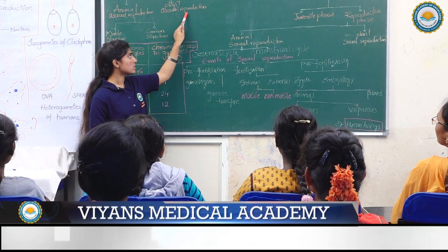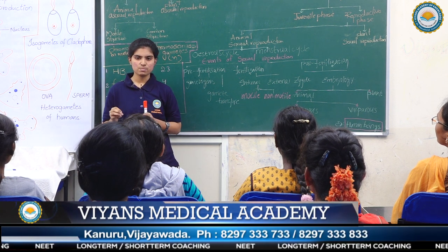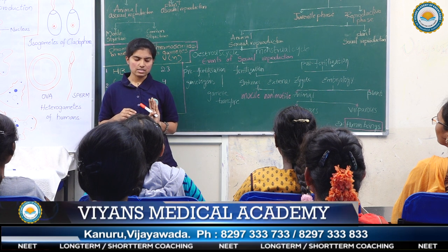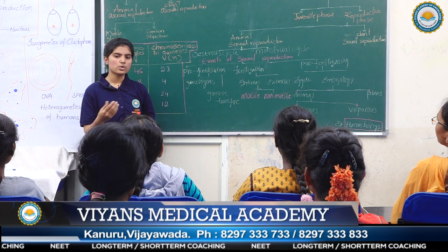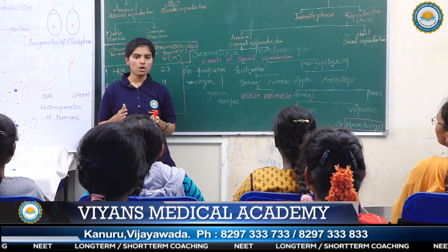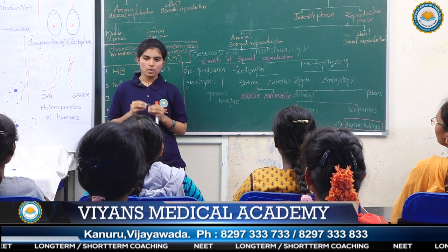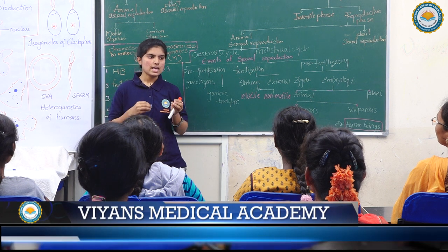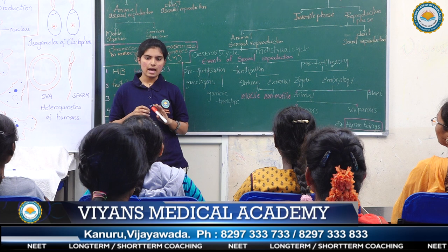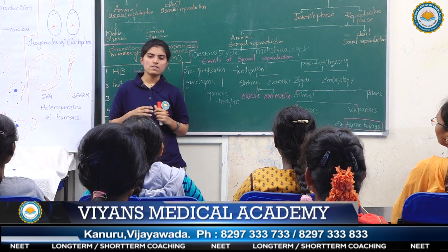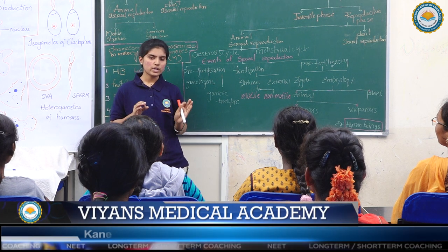Coming to plant asexual reproduction: in angiosperms, structures like suckers, rhizomes, and stolons are methods of asexual reproduction, commonly called vegetative propagation. The main point for the exam: all prokaryotic unicellular organisms reproduce by asexual reproduction through two methods — cell division and binary fission. Organisms which undergo cell division include Protista and Monera.